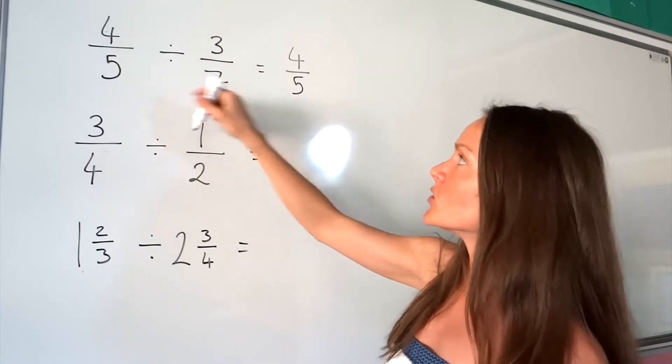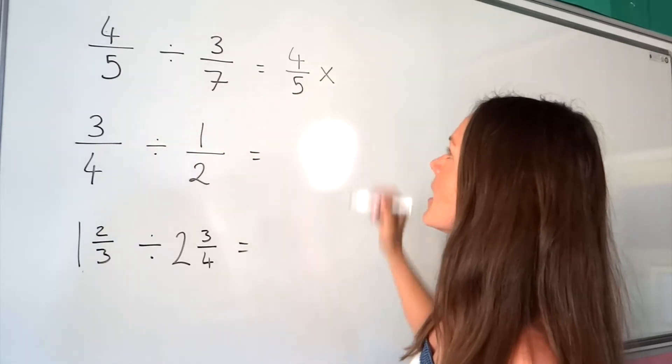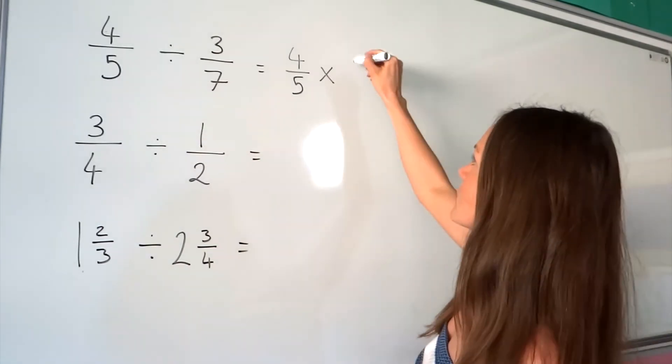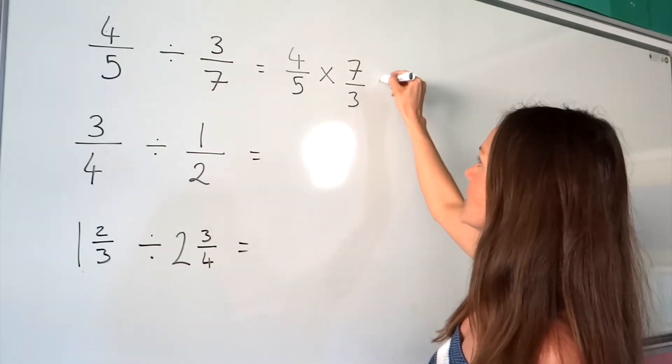The divide symbol we need to turn into multiply, and then this fraction, the second one, we need to turn upside down. So the 7 is now on top and the 3 is underneath.